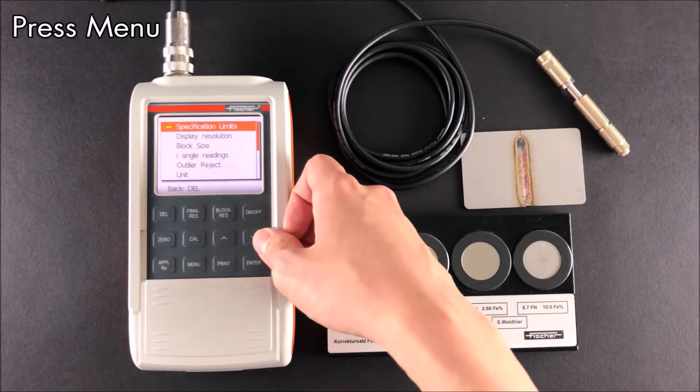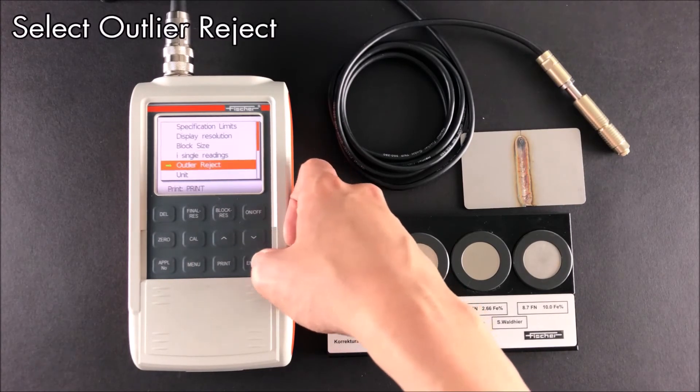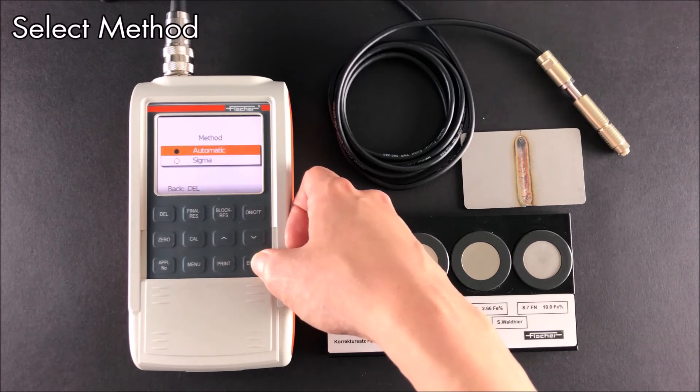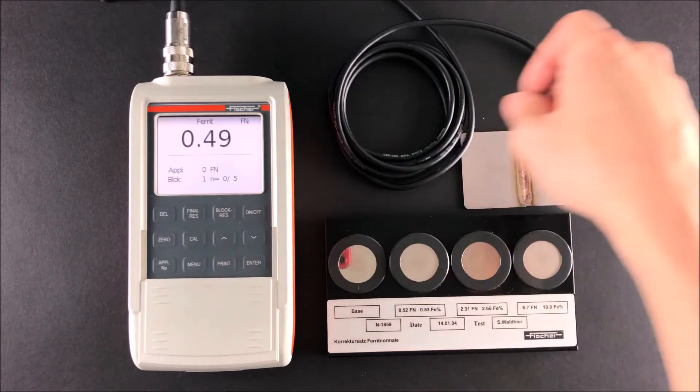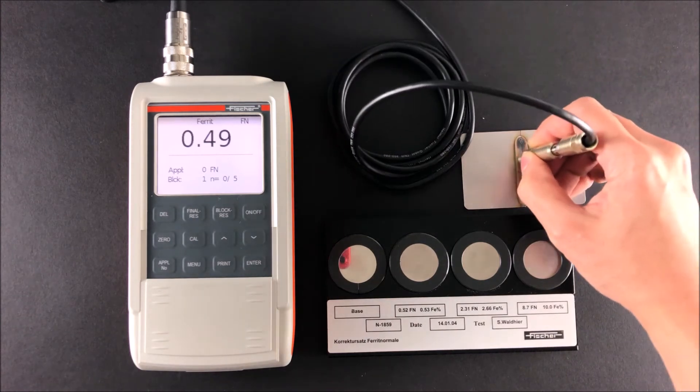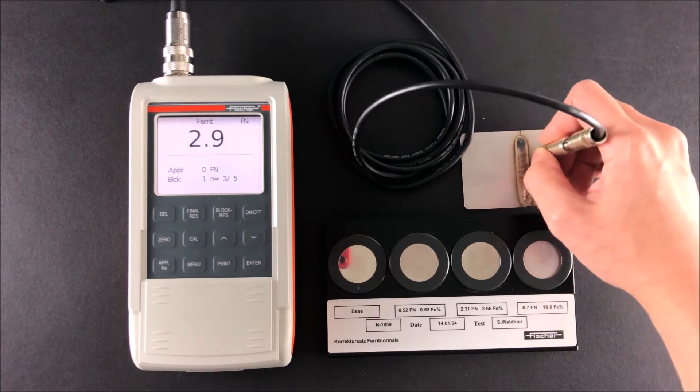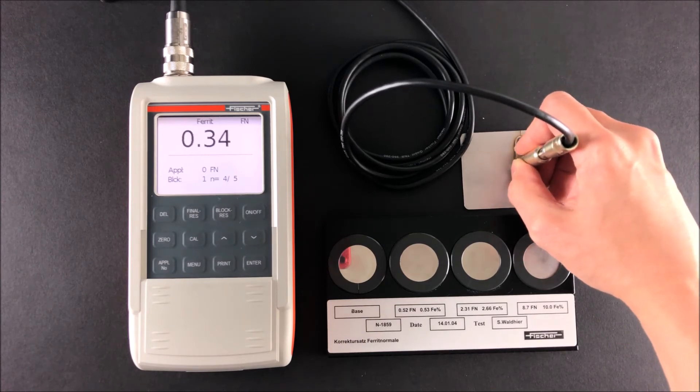Outlier reject can be used to reject readings that are distant from other readings. Automatic rejects readings based on limits set, while sigma rejects readings based on sigma limits. Measurements that are recognized as outliers during outlier rejection are not included in the statistical evaluation.